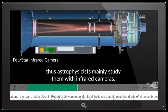I'm going to stop it right there. This is the four-star infrared camera. It says thus astrophysicists mainly study them with infrared cameras. What we found out, and you're going to see in another article that was published, they say that these brown dwarfs, you cannot see them. They're kind of invisible because they do not emit their own light like a regular star, like our sun.